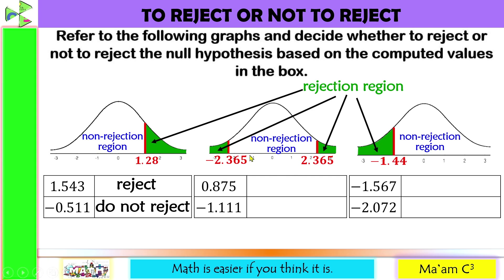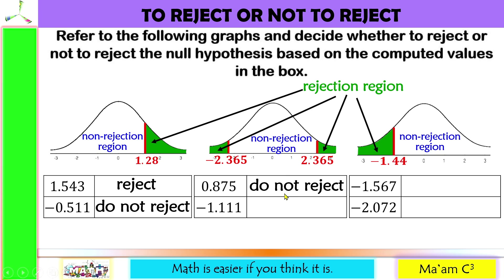Figure 2 is an example of a two-tailed test. The critical values are negative and positive 2.365. First value, 0.875, lies just before 1 and is on the non-rejection region — do not reject. Another value, negative 1.111, is on the right of negative 2.365 and also lies on the non-rejection region. So the decision is do not reject.